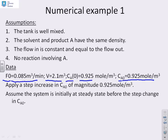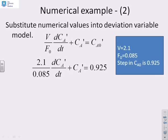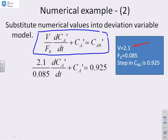We're going to do a step increase in the concentration in the inflow of 0.925 — so in essence, we're doubling the concentration of the inflow. We've assumed the system is initially at steady state before we apply the step change in input concentration, and we will solve this using deviation variables about the steady state. The steady state is based at 0.925. The deviation model is: V/F0 · dCA'/dt + CA' = CA0'.